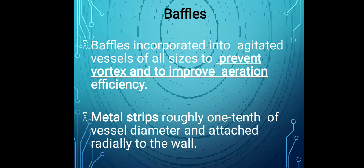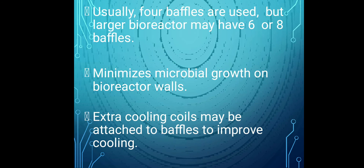Baffles are incorporated into agitated vessels of all sizes to prevent vortex formation and to improve aeration efficiency. Baffles are metal strips roughly one-tenth of the vessel diameter, attached radially to the wall. Usually four baffles are used, but larger bioreactors may use six or eight baffles to minimize microbial growth on bioreactor walls.